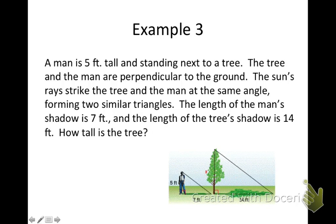And the final example will be an indirect measure. So, we're using the information given in the paragraph. There is a little illustration, but I know the numbers are pretty small. So, this says a man is 5 feet tall, standing next to a tree. The tree and the man are perpendicular to the ground. The sun's rays strike the tree and the man at the same angle, forming two similar triangles.